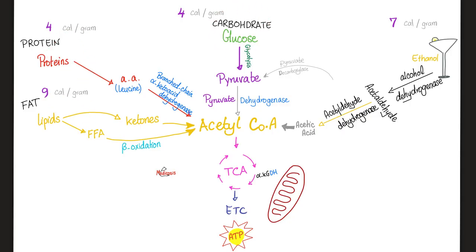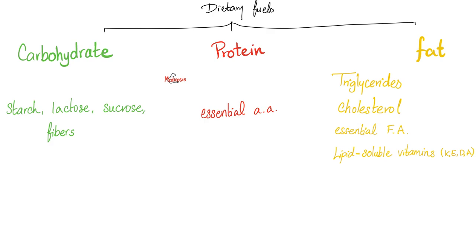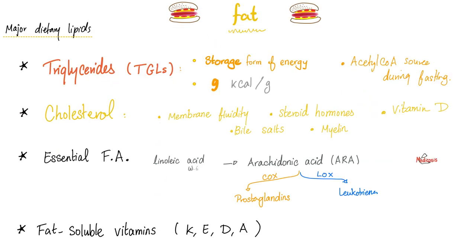Whether you eat carbs, proteins, or lipids, the end result is acyl-CoA, into the Krebs cycle, electron transport chain, oxidative phosphorylation - giving you the energy currency of the cell. Dietary carbs include starch, lactose, sucrose, and fibers. Proteins include plant protein, animal-based protein, or amino acid supplements like arginine. And fats - don't forget not just fats, but fat-soluble vitamins as well: vitamin K, E, D, and A. If you cannot absorb fat, you will not be able to absorb these vitamins either.